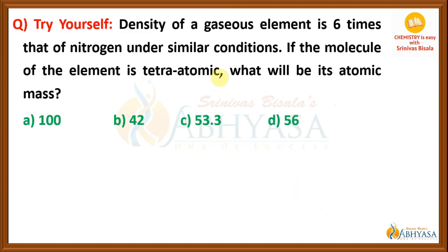See here, the density of a gaseous element is 6 times that of nitrogen under similar conditions. And if the molecule of the element is tetraatomic, what will be its atomic mass? So, the density of a gaseous element is given as 6 times that of nitrogen. And the molecule is known to be tetraatomic. From this information, we need to calculate the atomic mass of the element.